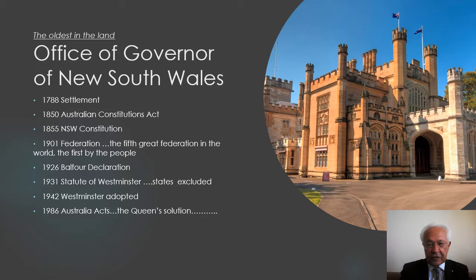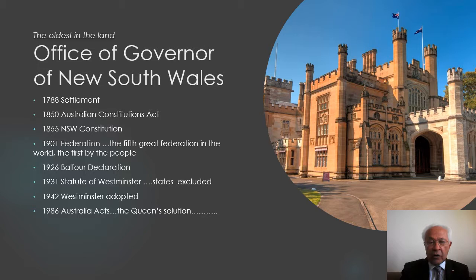This is a remarkable system, because it allows each of the Premiers to advise the Queen directly. This could never have been arranged or worked out in a Republic. It can only work in a constitutional monarchy, and its importance was underplayed in the debates in 1999, concerning the Keating-Turnbull Republic.